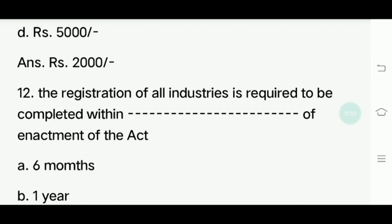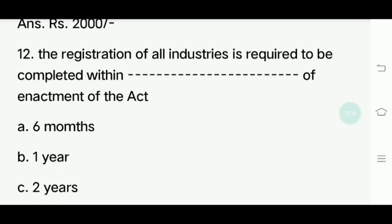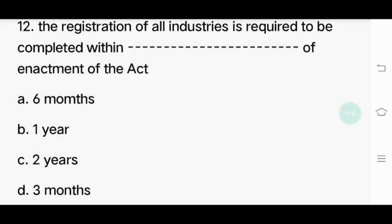Twelfth question: The registration for all industries is required to be completed within how many days of enactment of the Act? Options: 6 months, 1 year, 2 year, 3 months. Answer is 6 months.